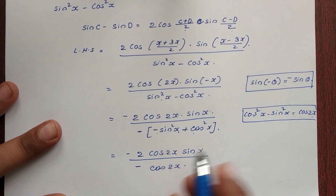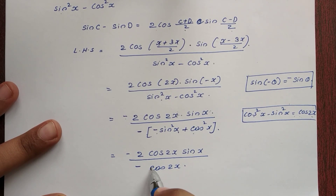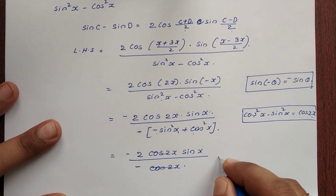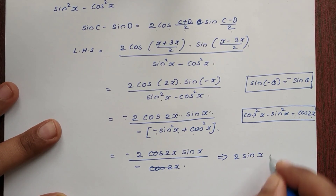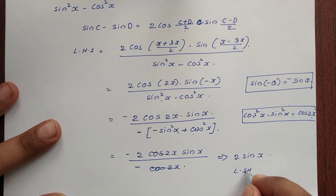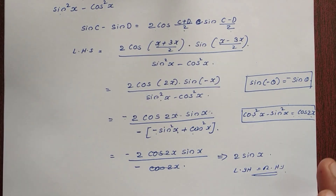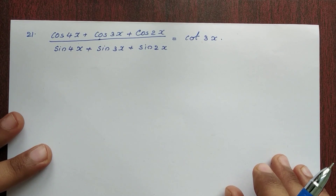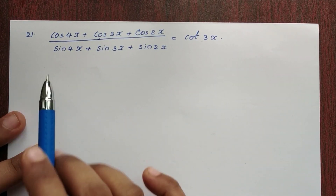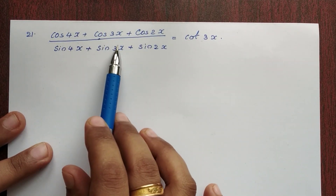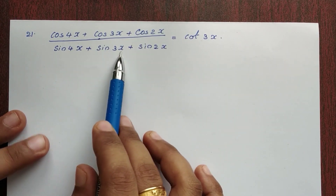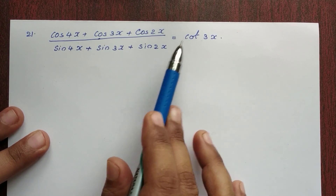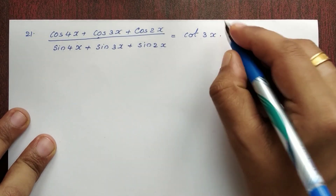Now the next problem, the 21st problem: prove that cos 4x plus cos 3x plus cos 2x, the whole divided by sin 4x plus sin 3x plus sin 2x, is equal to cot 3x.